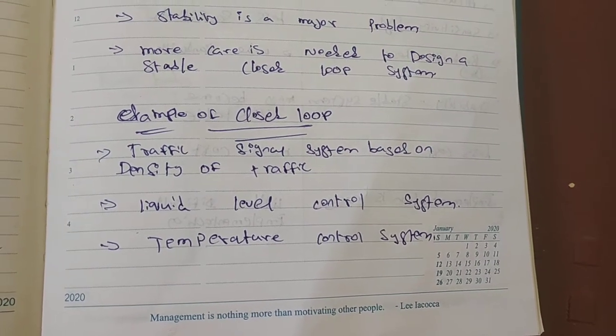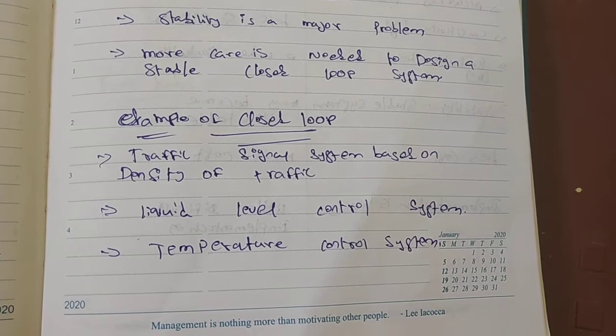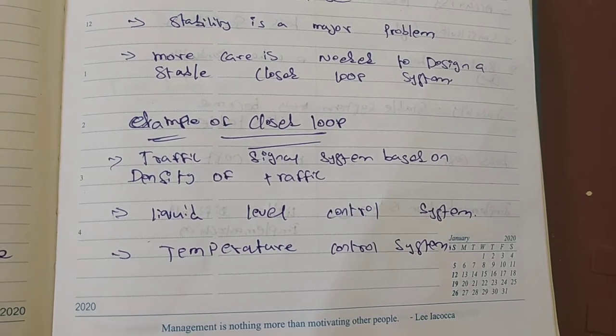This is a major control system: open loop control system and closed loop control system.